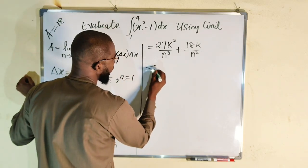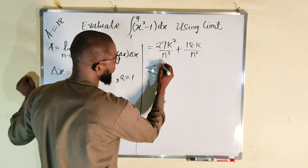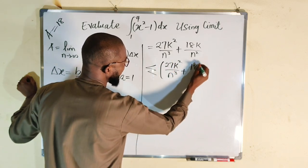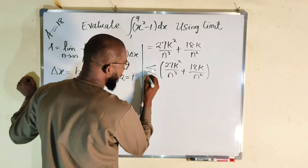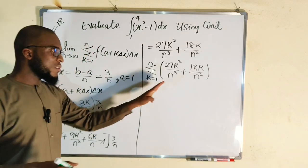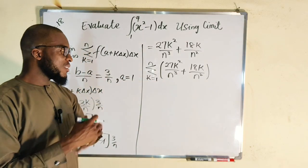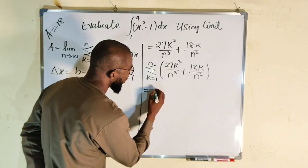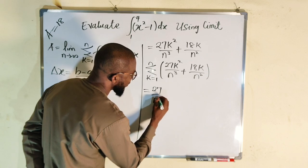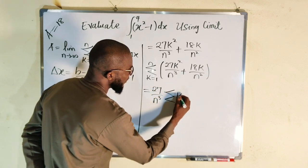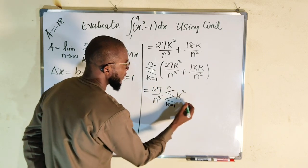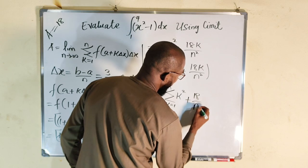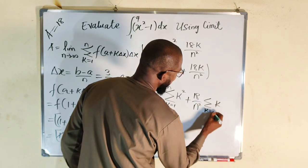Taking the summation of 27k squared over n to the third power plus 18k over n squared, where k goes from 1 to n. Since this is a summation with respect to k, anything that is not k we factor out. From the first term: 27 over n to the third power comes outside, multiplied by the summation of k squared from 1 to n. From the second term: 18 over n squared comes outside, multiplied by the summation of k from 1 to n.